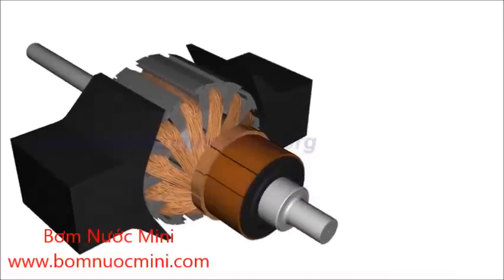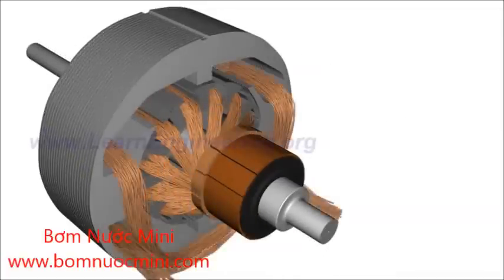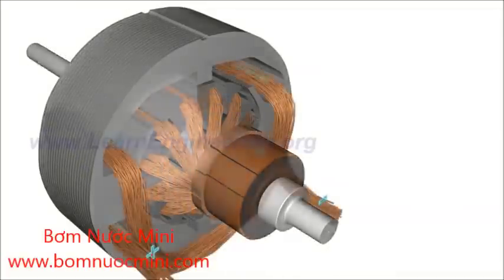A permanent magnet stator pole is used only for very small DC motors. Most often, an electromagnet is used. The field coil of an electromagnet is powered from the same DC source.